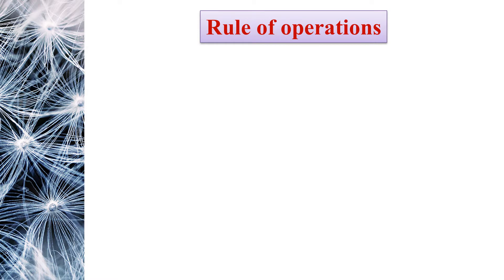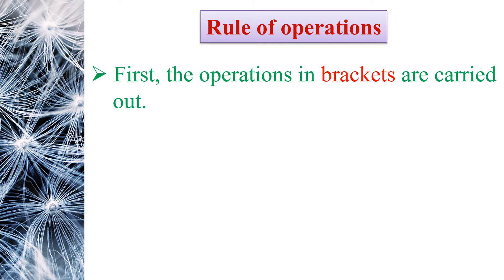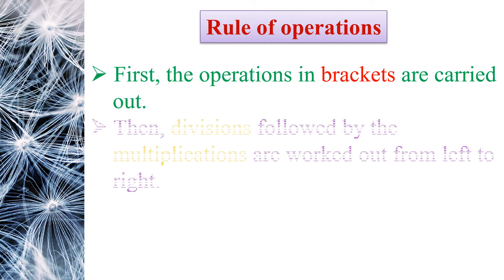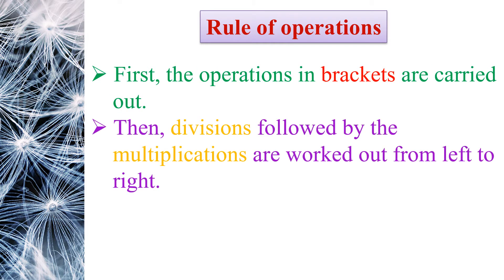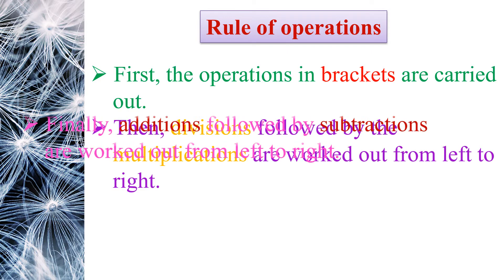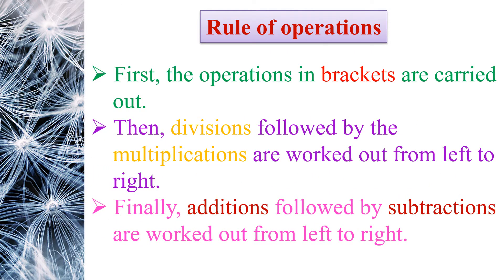Rule of operations. To simplify an expression involving brackets, we follow the rules of operation as below. First, the operations in brackets are carried out. Then, divisions followed by multiplication are worked out from left to right — keep that in mind. Finally, additions followed by subtractions are worked out from left to right.